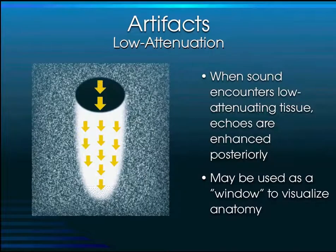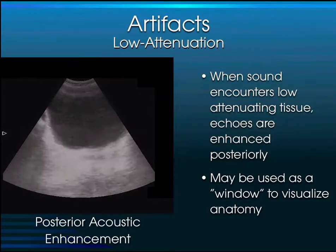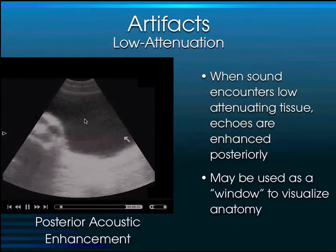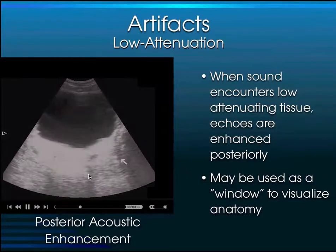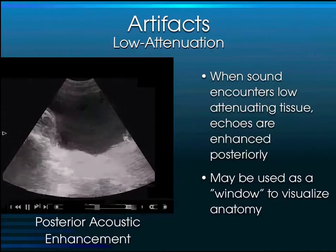Sometimes sound can travel through an organ very easily, such as through fluid, water, or the urinary bladder. When sound encounters this low-attenuating tissue, the echoes behind it get enhanced posteriorly — posterior acoustic enhancement. That's why we use the bladder as an acoustic window to visualize structures behind it. The anechoic bladder appears black on screen, and structures behind it are echo-bright due to posterior acoustic enhancement from the bladder's low-attenuating effect.